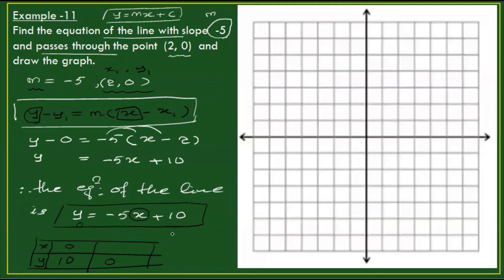So when y equals 0, x equals 2; and when x equals 0, y equals 10. These are the key intercept points for plotting the graph.